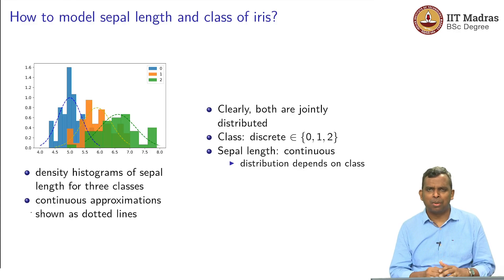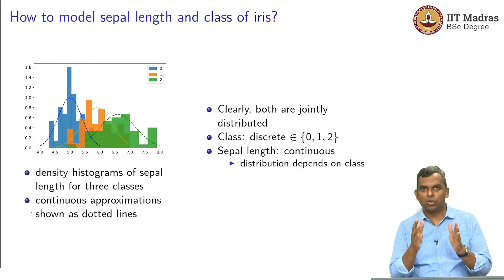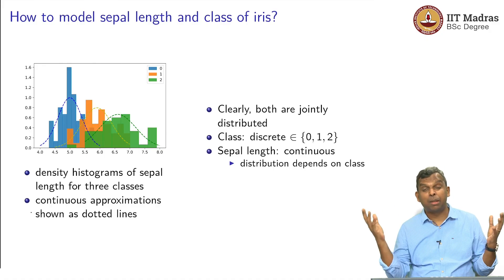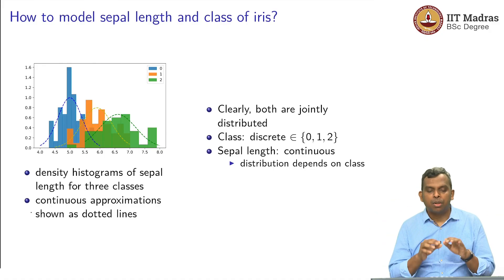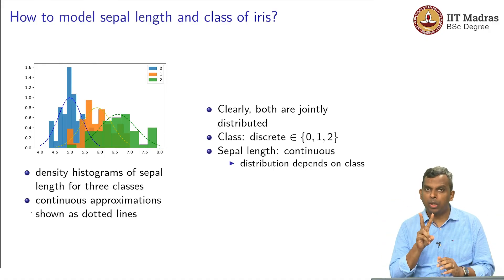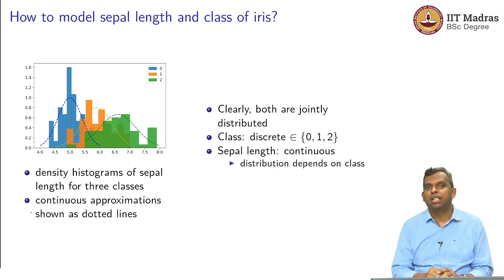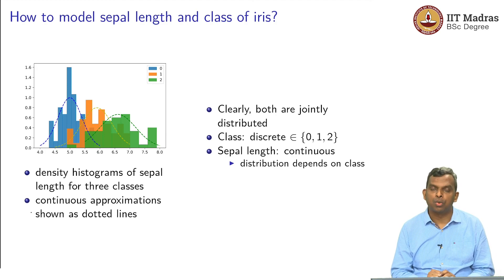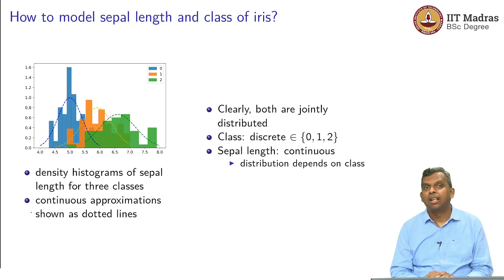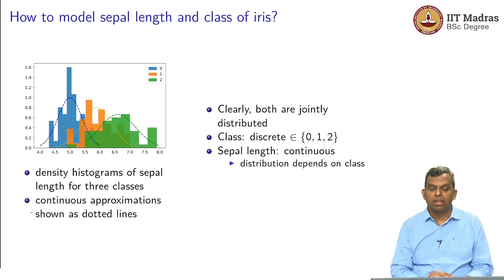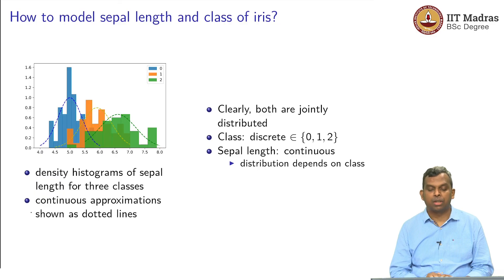It may not just be two variables — maybe there are multiple variables, we will come to that later on. But to begin with just two variables, one continuous and one discrete: how will you describe their joint distribution? What kind of quantities do you have to define? That is what we are going to see in the next lecture. Thank you very much.